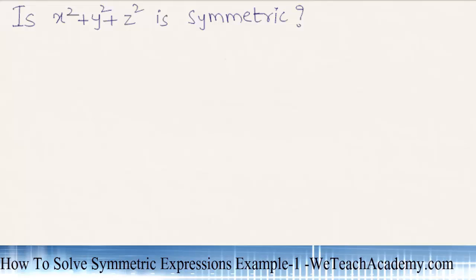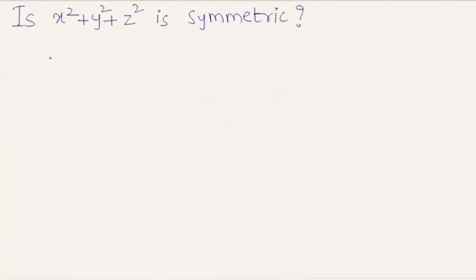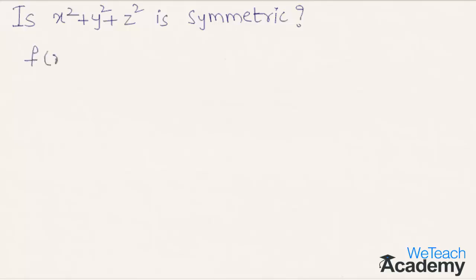Welcome to vtshacademy.com. In this presentation we are going to solve an example on symmetric expressions. We have to find whether the expression x squared plus y squared plus z squared is symmetric or not. This expression is in three variables x, y and z. Let us consider f as x squared plus y squared plus z squared.